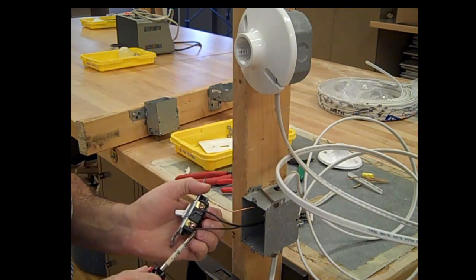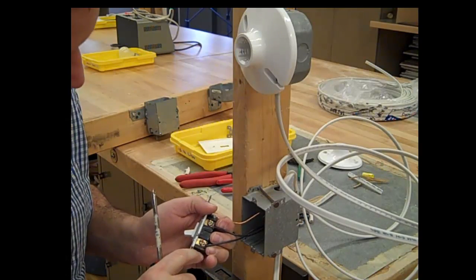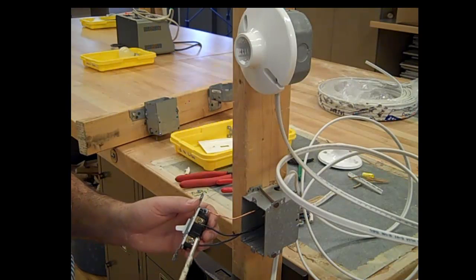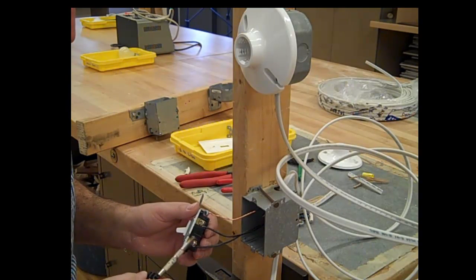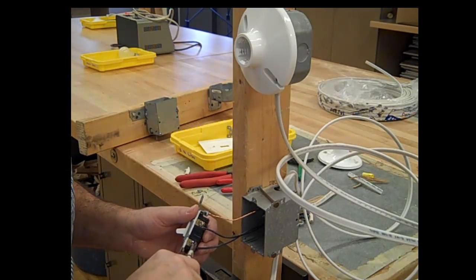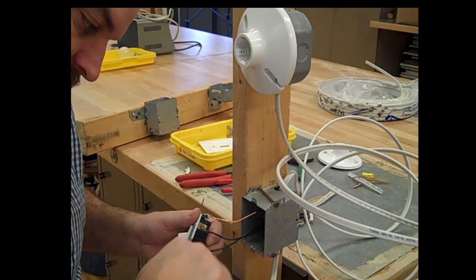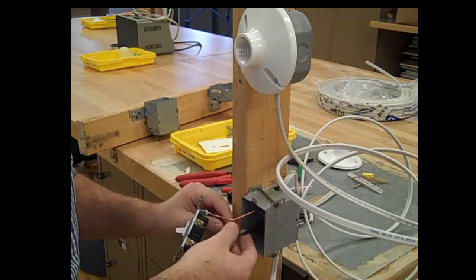Notice the direction that the hooks go around these screws. That is important. The hooks go around the screw in the clockwise direction. The reason is if you did it backwards, when you go to tighten this up it actually kicks the wire off. If you do it in the clockwise direction, when you're tightening that screw it's sucking the wire back in.